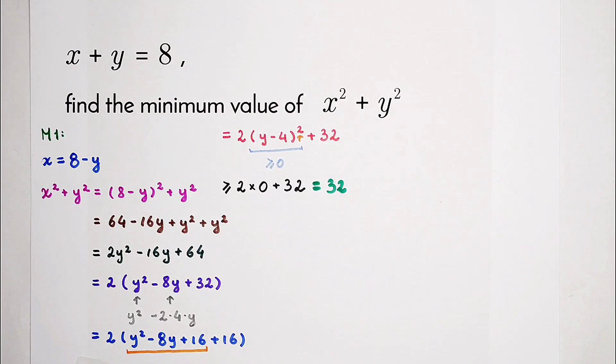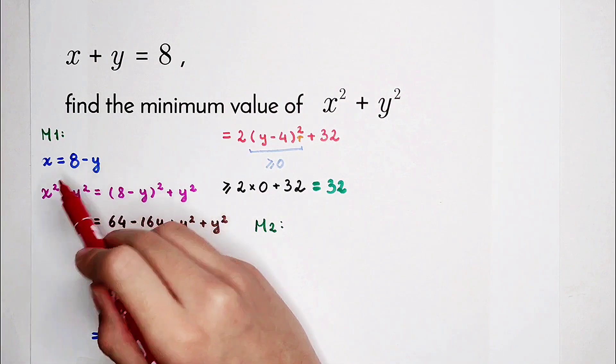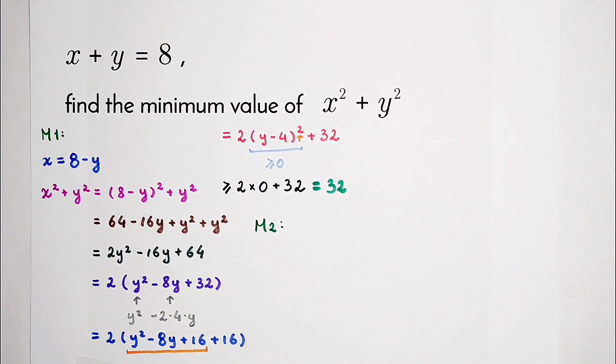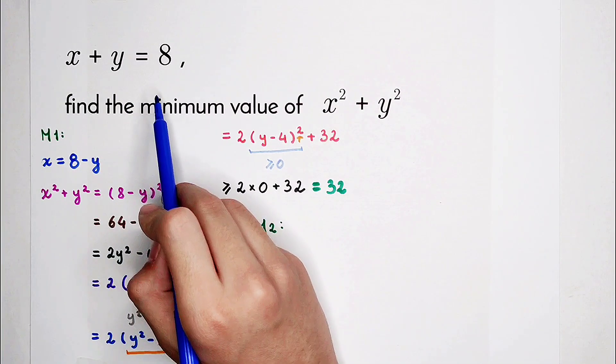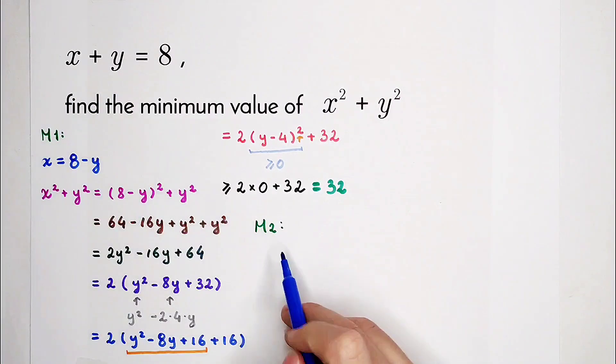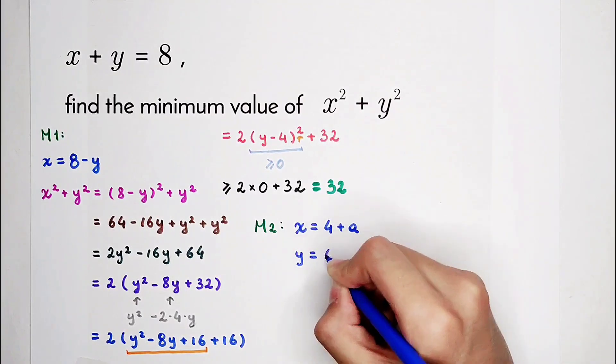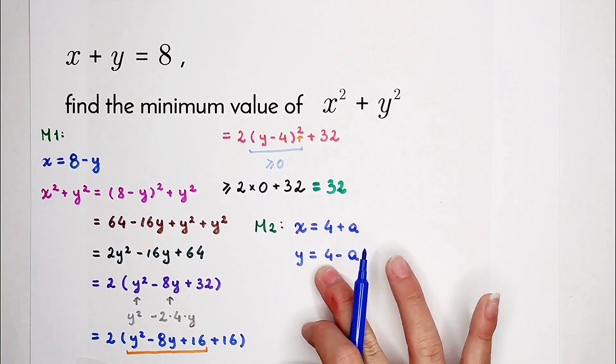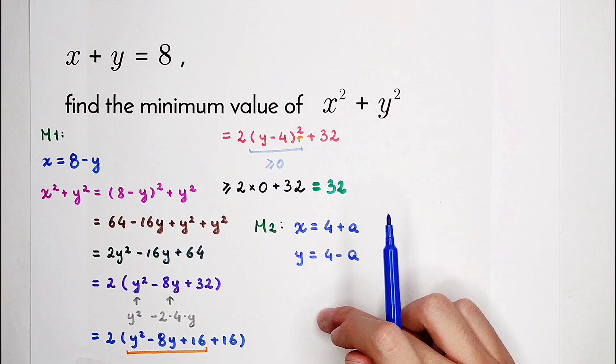Method number 2. In the first method, we wrote x as a term of y. And now I don't want x, I don't want y. I can write x and y, both of them, as a term of another variable. What's the variable? Of course, I'm going to write it as a. Because the sum of x and y is 8, the average is 4, of course. The mean of x and y is 4. So that means we can write x as 4 plus a, and y as 4 minus a. Therefore, the sum of x and y is 4 plus 4 plus a minus a, that is 8. Since plus a and minus a will cancel out each other.